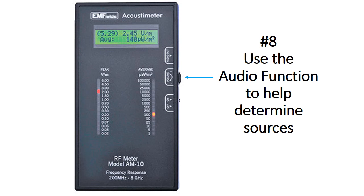One of the most helpful features of this meter is the audio function. There's a volume control on the right side of the meter, and you can turn it up or down. It takes digitally modulated frequencies and electronically converts them into a sound you can hear. This is very helpful because you'll hear distinctive sounds associated with different kinds of radio frequency sources — you can learn to tell the difference between a cell tower, a smart meter, a DECT cordless phone, or a Wi-Fi router. For example, if you hear a particular sound and suspect it's a Wi-Fi router, unplug the router and if that distinctive sound disappears simultaneously, you've confirmed with the audio function that that was the source.